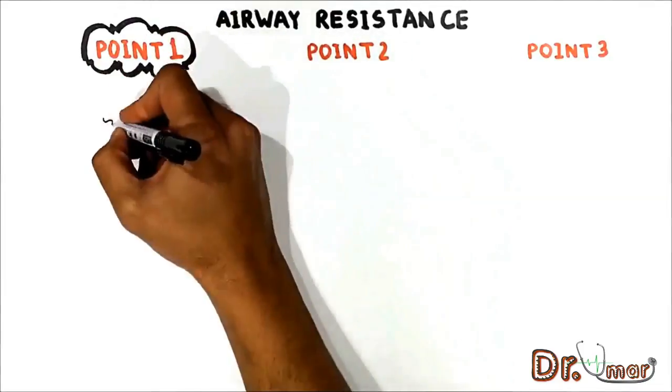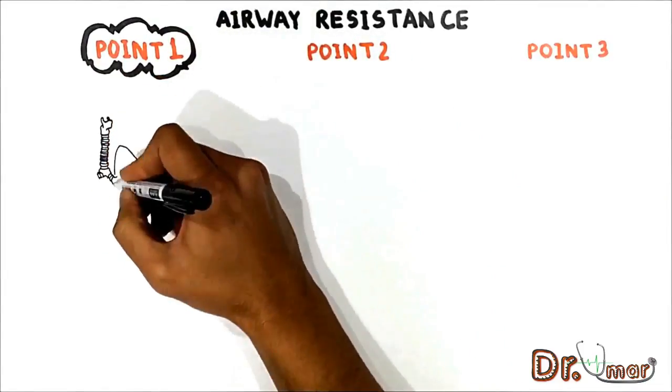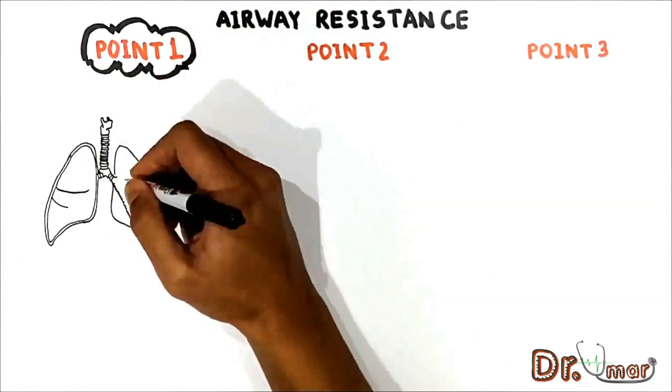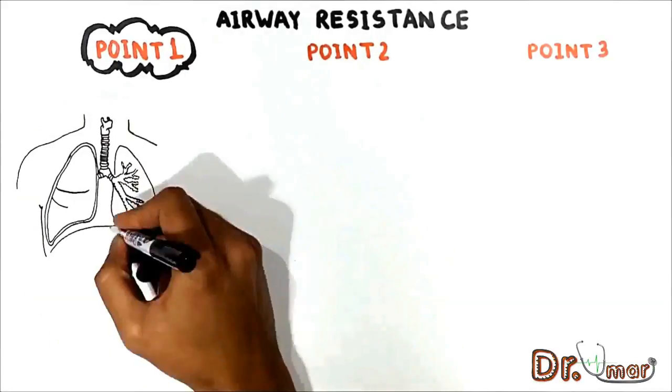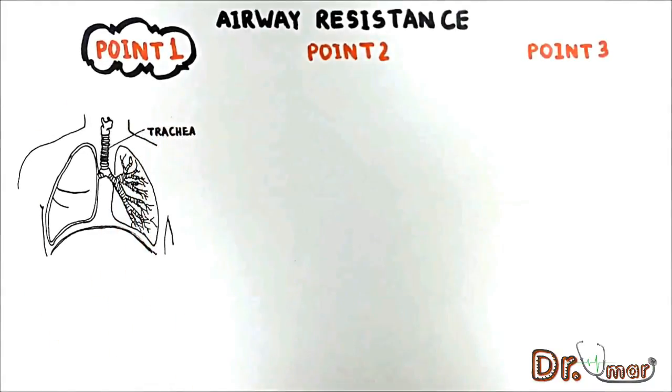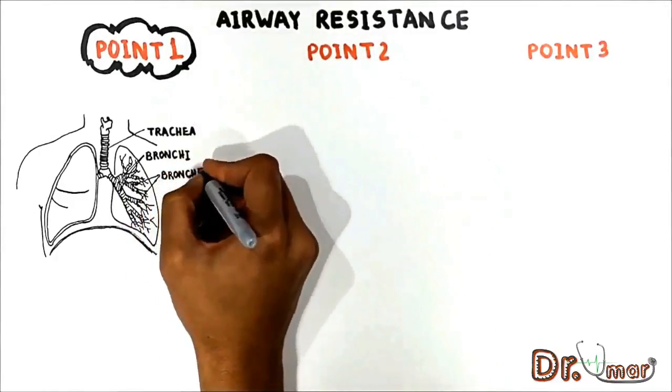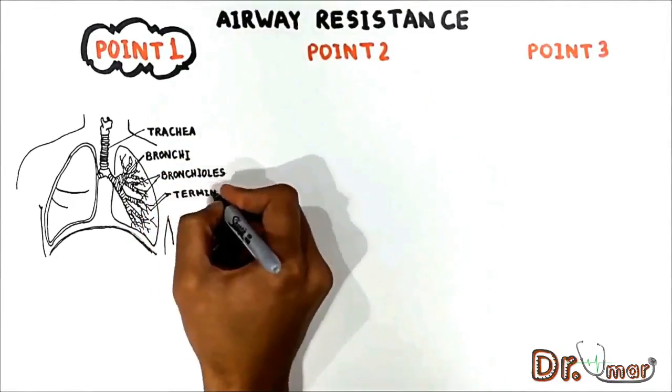It is very important to note that airways, like the systemic circuit, represent a branching system. It is made up of the trachea, bronchi, bronchioles, and terminal bronchioles.